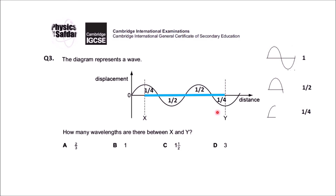To calculate the total wavelengths from X to Y, add all the portions: quarter plus half plus half plus quarter. When you add the numbers you get three-halves, or as a mixed number, one and a half. Checking the options: A is two-thirds, B is one, C is three-halves (1.5), and D is three — so C is the right answer.